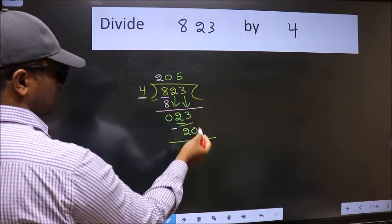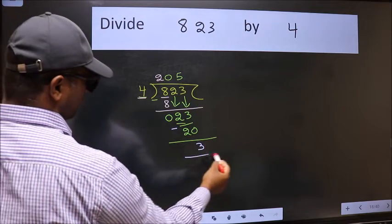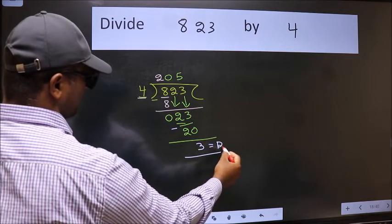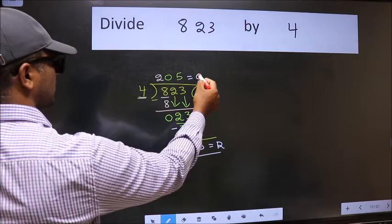No more numbers to bring it down. So we stop here. This is our remainder and this is our quotient.